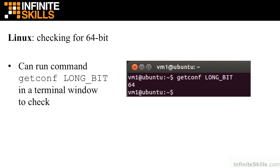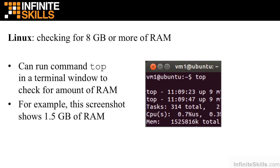If you're using a Linux computer and need to check that it's 64-bit, you can open a terminal window and run the command 'getconf LONG_BIT'. If you have a 64-bit machine, it's going to display 64. Next, on our Linux computer, we want to check for at least eight gigabytes of RAM by running the command 'top' in a terminal window, which will display the amount of memory. In this case, this particular machine only has 1.5 gigabytes of RAM, which certainly wouldn't be enough — we need at least eight gigabytes.